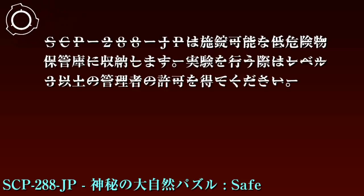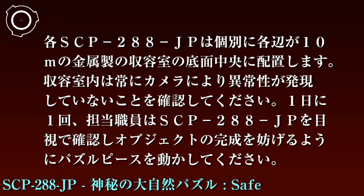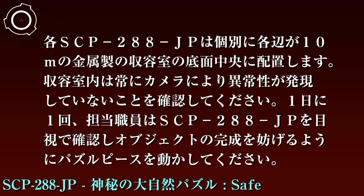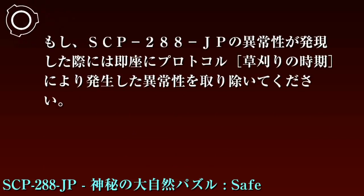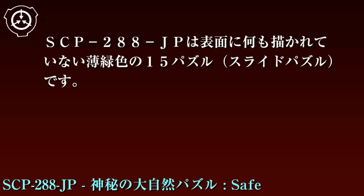収容プロトコル：SCP-288-JTは施錠可能な定期券物保管庫に収納します。実験を行う際はレベル3以上の管理者の許可を得てください。各SCP-288-JTは個別に、各辺が10mの金属製の収容室の底面中央に配置します。